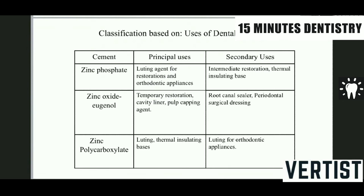Zinc oxide eugenol cements are used as temporary restorative materials, cavity liners, pulp capping agents, root canal sealers, and periodontal surgical dressings. According to the use of each cement, they have been given primary and secondary uses, with consideration for their physical and chemical properties and how they behave in contact with the tooth.